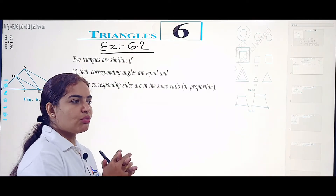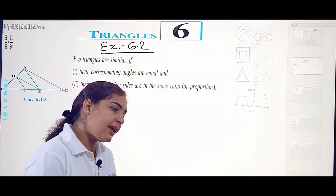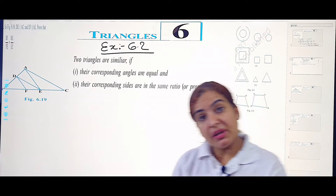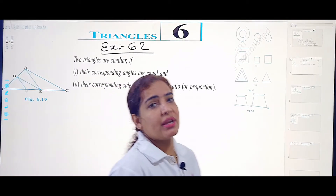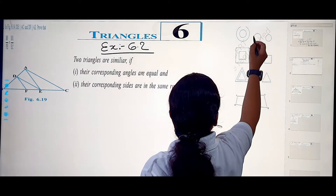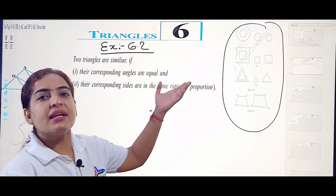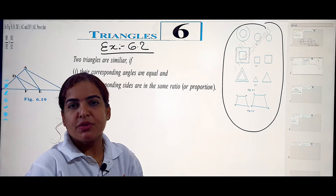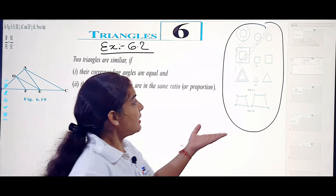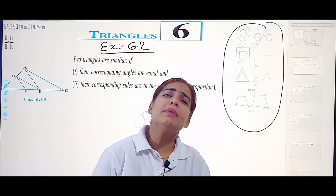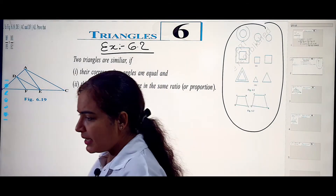Congruence of triangles means two figures must have the same shape and size. But for similar triangles, the shape must be the same but the size does not necessarily need to be the same. For example, these circles have the same shape but different sizes — they are similar. Similarly, squares with the same shape but different sizes are similar but not congruent. The same applies to triangles, trapeziums, and quadrilaterals.